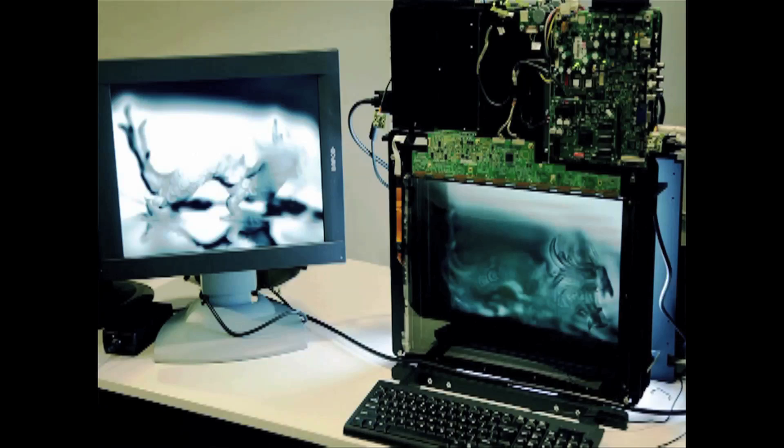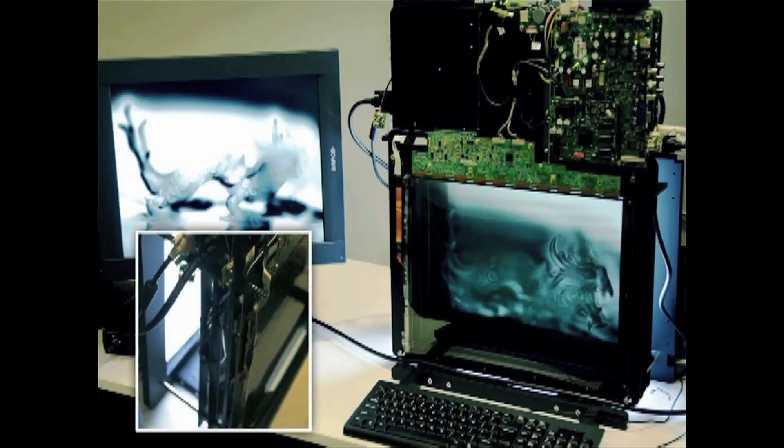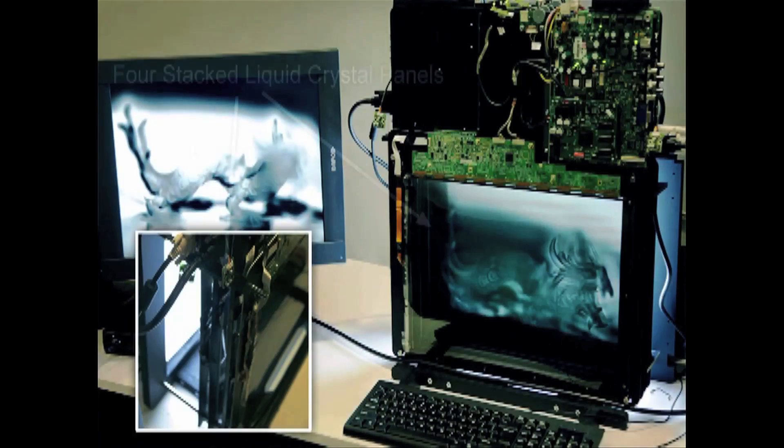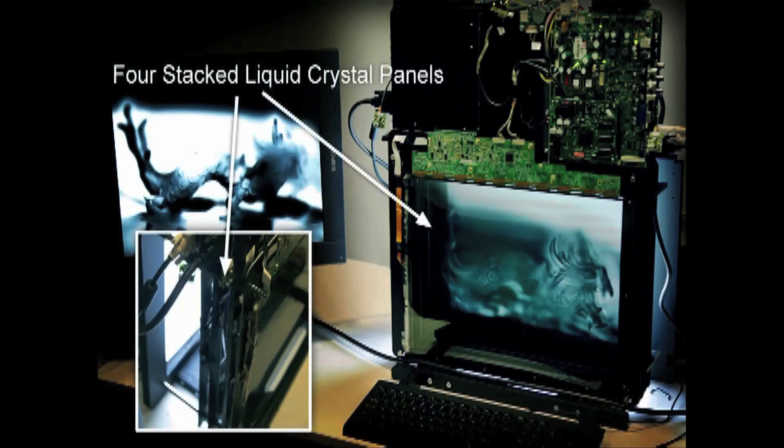Well, one of the main reasons is that a holographic television will require pixels many times smaller than what we can manufacture, even for our best mobile phones today. And so what we're trying to do in our laboratory at MIT is develop a 3D display technology that uses today's dominant display technology, which is liquid crystal panels, in a way that can create a beautiful 3D scene like a hologram.